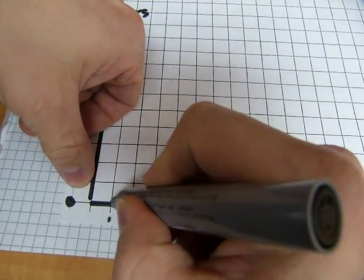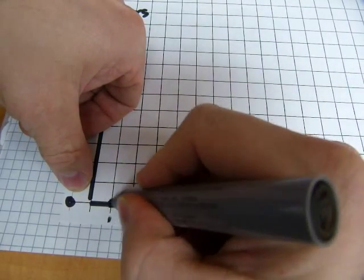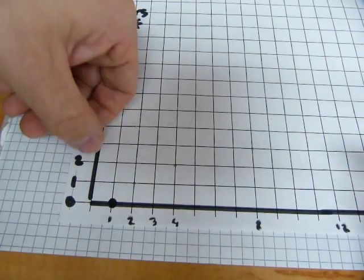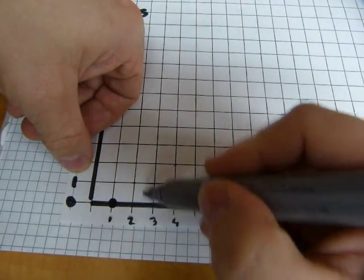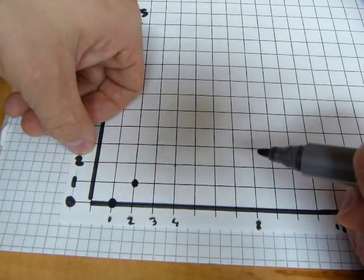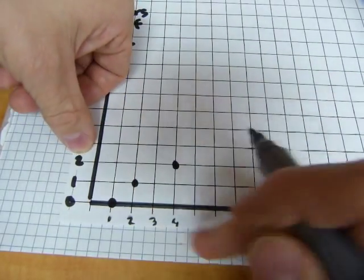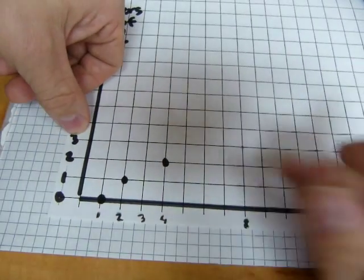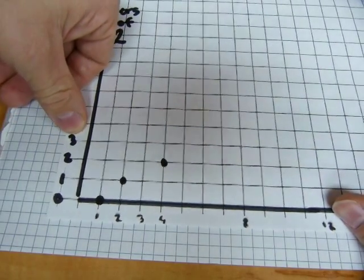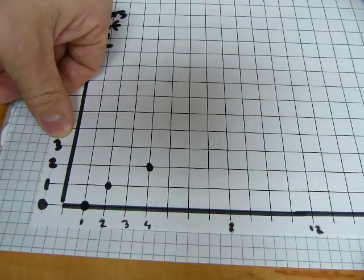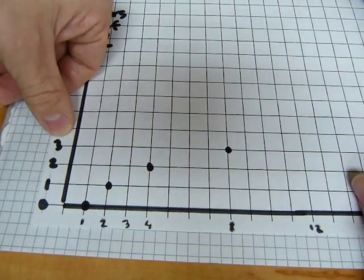2 to the power of 0 is 1. So, there's one point there. 2 to the power of 1 is 2. 2 squared will be 2 by 2. So, that's 4. 2 to the power of 3 will be 2 by 2 by 2. So, that's gonna be 8, which lives there.